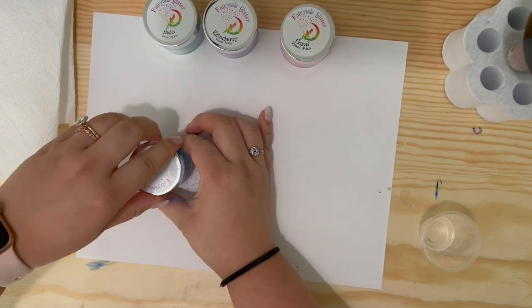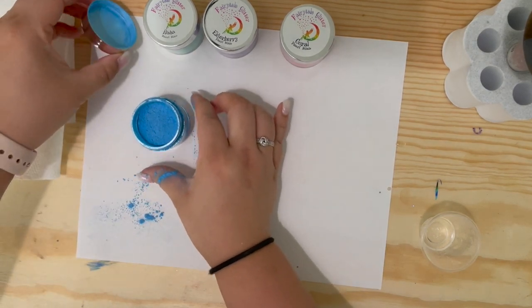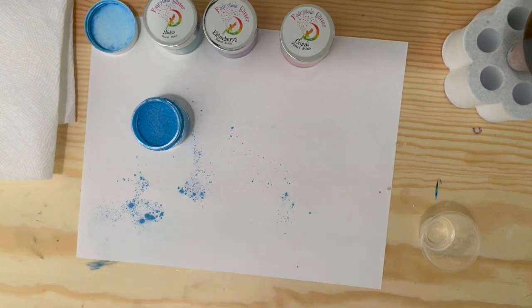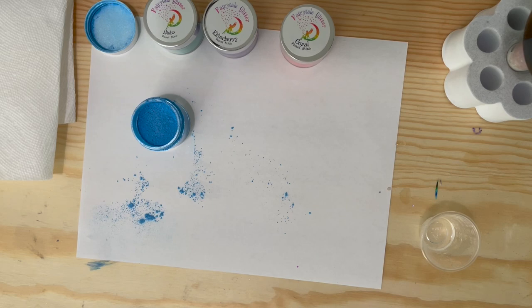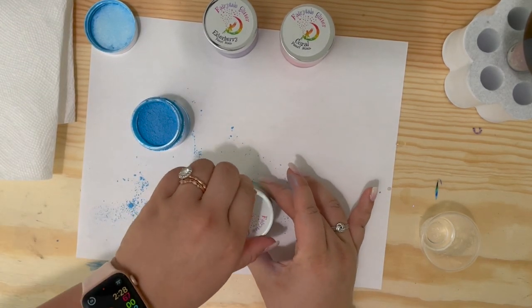These are all micas from Fairytale Glitter. I love the way that these micas look. They are just super pigmented and as you can see, they like to fill up the jar quite a bit. And I made a mess with my mica powder, but oh well. You clean it off and you keep going.